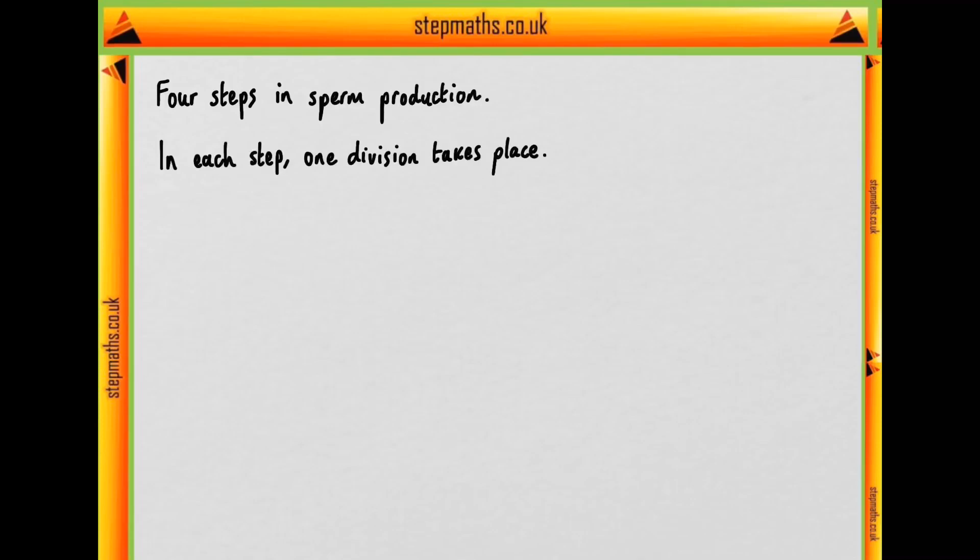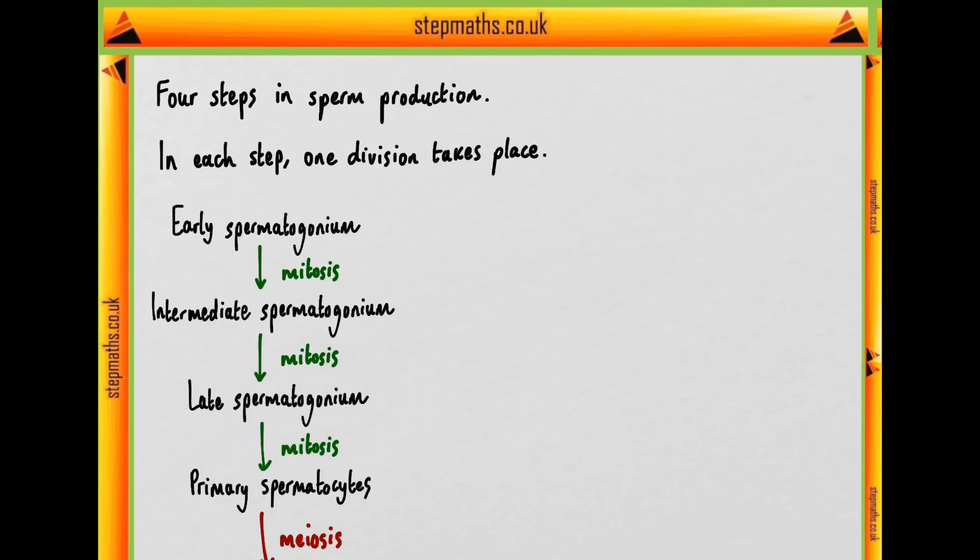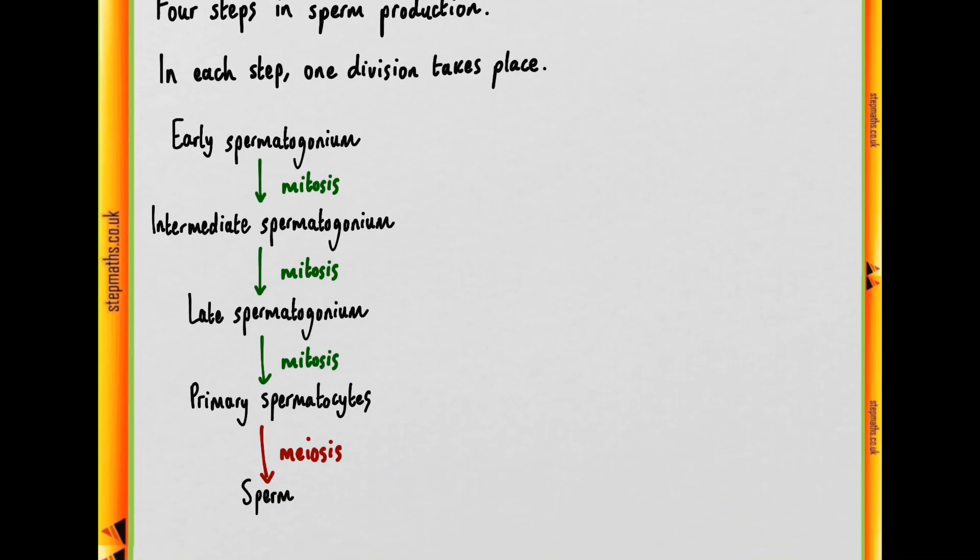We're told that there are four steps involved, and in each step one cell division takes place. So here's the diagram we're given, showing these four steps, labelled by the four arrows.